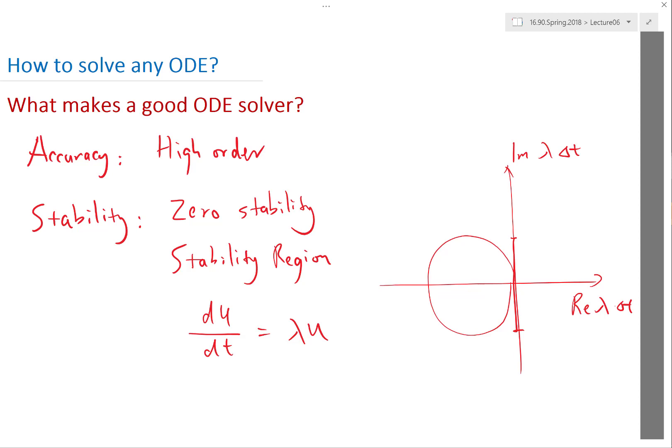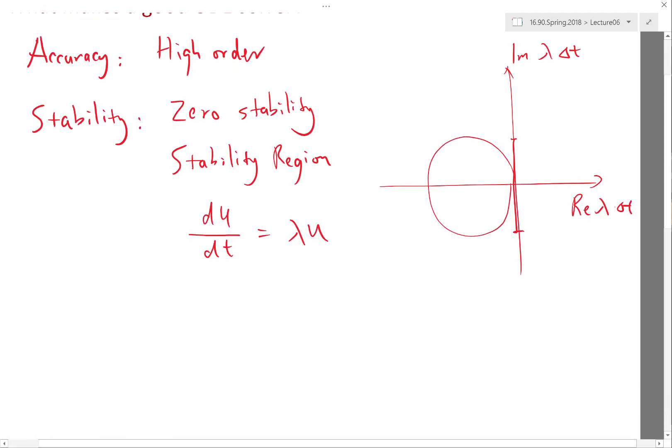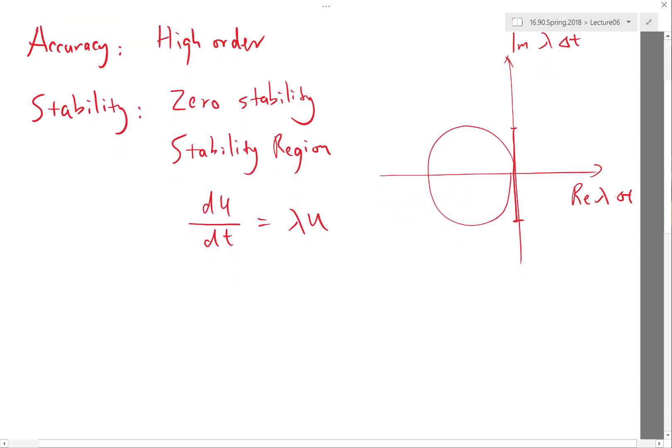All right, so that's for all the schemes we have discussed before. But what I said just now is actually not generally true. What I said is: once you make delta t smaller, the stability region expands; once you make delta t larger and larger, the stability region shrinks. That's actually not generally true.